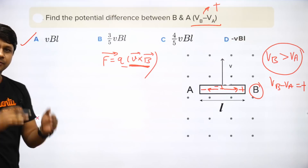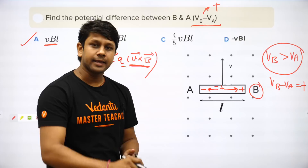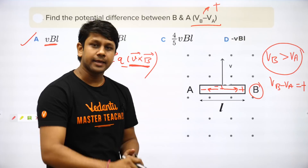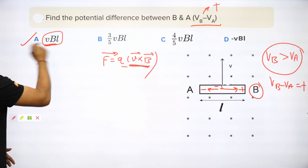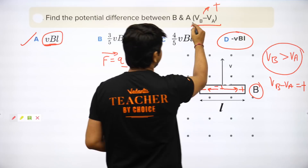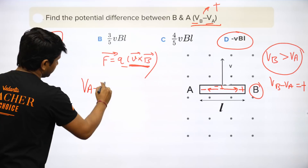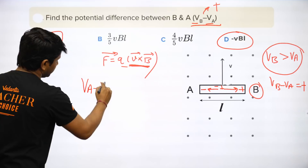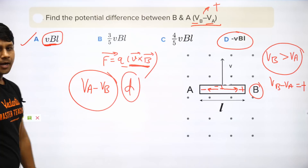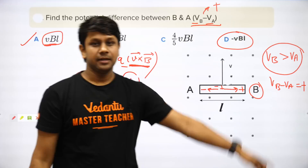So if the question had asked VA − VB instead, the answer would have been option D (negative). The key point is: first find the direction of V×B to determine which end is positive and which is negative, and then determine the sign of the potential difference based on what is asked.